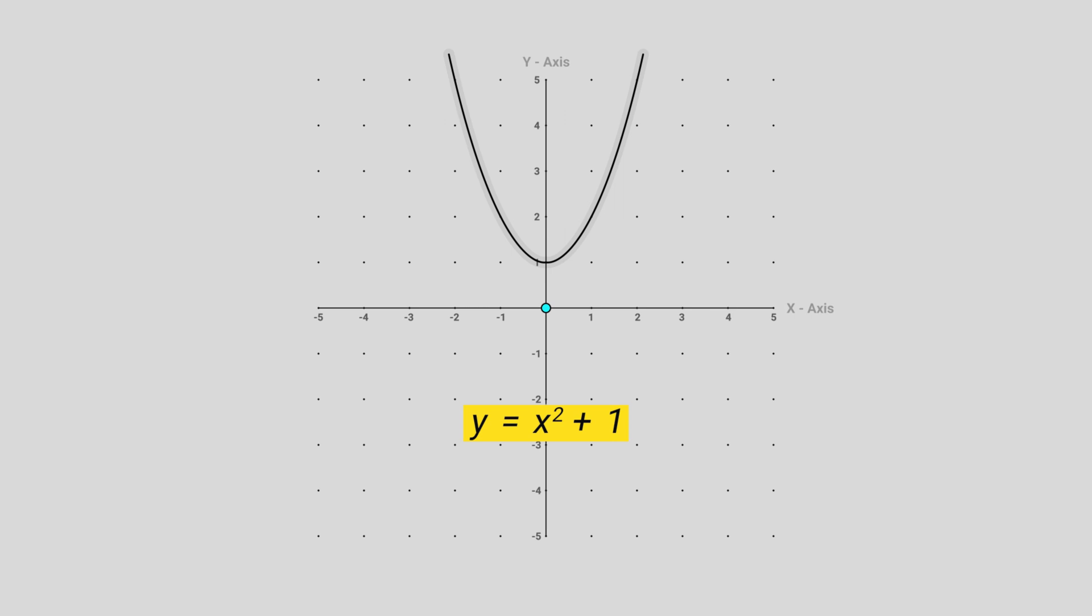The fundamental theorem of algebra tells us there are two solutions to this equation which we plug into our function and get 0 out. Where could these two missing roots be? In our one-dimensional line, we can see all numbers: positive, negative, fractions, and even irrational numbers.